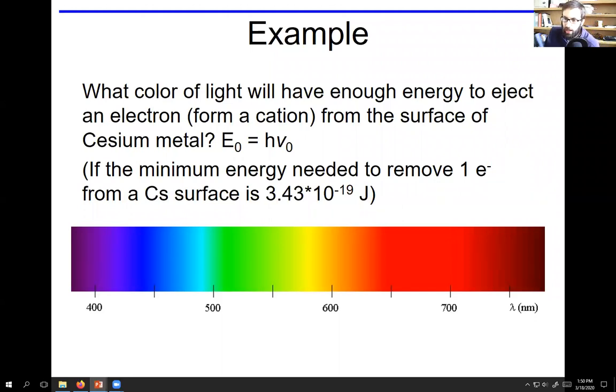So basically we're going to have to figure out what wavelength of light corresponds to this work function energy. That will be the minimum energy light that we need to shine to eject an electron. And then once we have the wavelength, we'll correspond it to a color using this diagram.